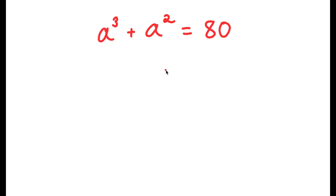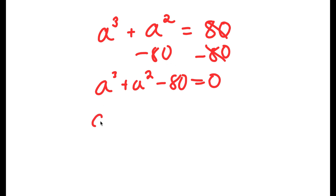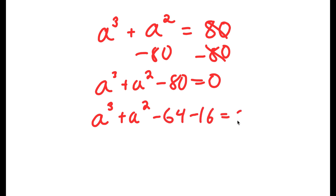In this problem, I have a to the power of 3 plus a squared is equal to 80. To solve this, I'm going to first subtract 80 from both sides to get a cubed plus a squared minus 80 equals 0. I'm going to rewrite this as a cubed plus a squared minus 64 minus 16 equals 0, simply writing negative 80 as negative 64 minus 16.